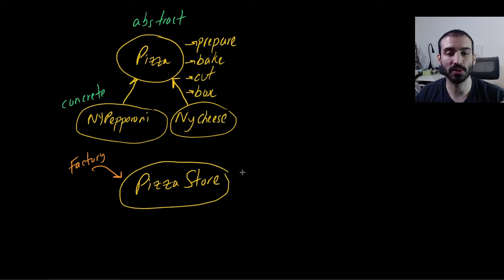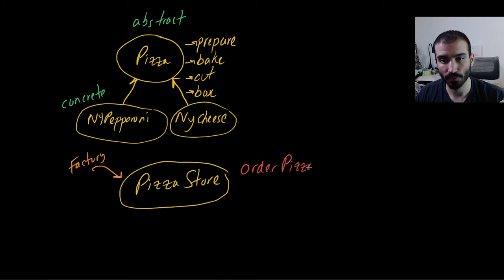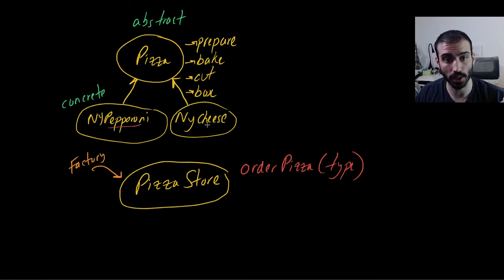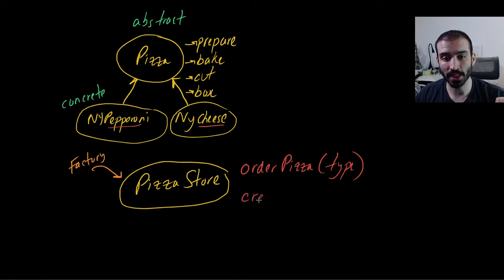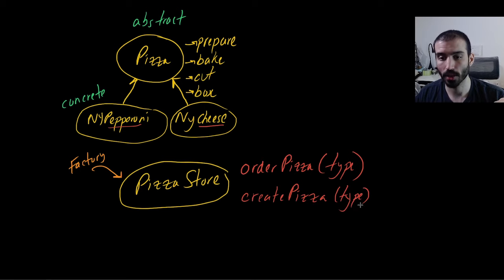The two methods are: order pizza, which takes a type like cheese or pepperoni — not the full New York style name, just the type; and create pizza. I'll explain why we have these two different methods in a moment. In our pizza example we always have the same sequence of operations: prepare first, then bake, then cut, then box. That pattern stays the same and never changes regardless of pizza type.